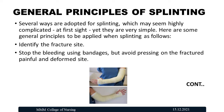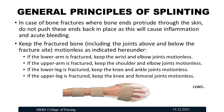General principles of splinting: first, identify the fracture site. Second, stop the bleeding using bandages, but avoid pressing on the fracture site as it is painful and deformed. In case of bone fracture where bone ends protrude through the skin, do not push them back in place as this will cause inflammation and acute bleeding. Keep the fractured bone motionless: if the lower arm is fractured, keep the wrist and elbow joint motionless; if the upper arm, keep the shoulder and elbow joint motionless; if the lower leg, keep the knee and ankle joint motionless; if the upper leg, keep the knee and femoral joint motionless.